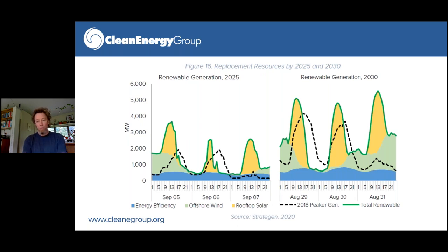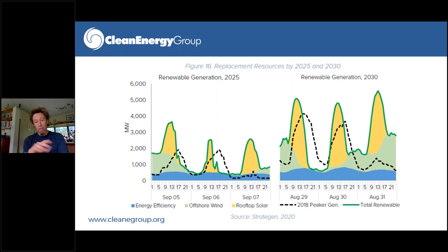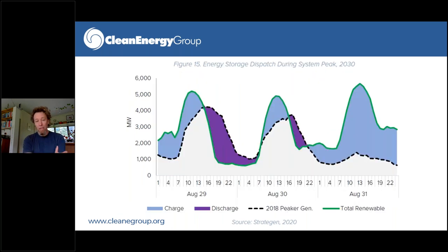This graph shows the challenge of matching renewable resource generation with demand. The dotted line shows electricity demand; the green shows offshore wind generation and the yellow shows rooftop solar. There's plenty of capacity, but it's not always available at the same time as the demand. This is where we get into the need for energy storage and flexible demand — the kind of flexible demand that a virtual power plant can provide. The chart shows the charging (blue) and discharge of battery storage systems overlaid in August, when there are high levels of demand, to fill in those gaps.